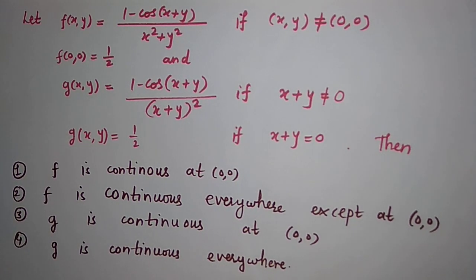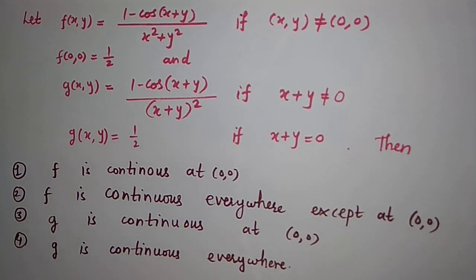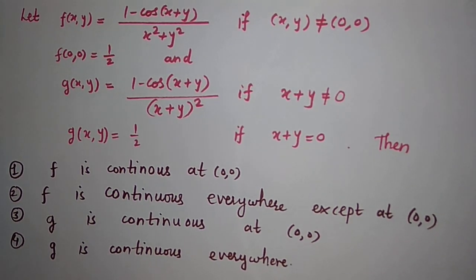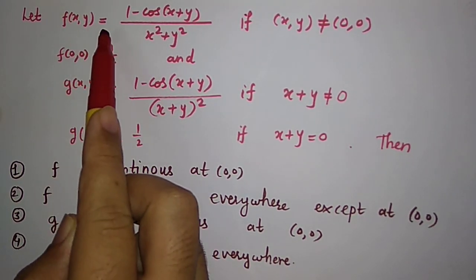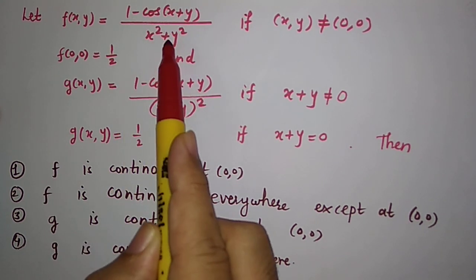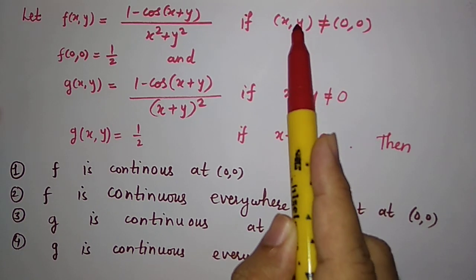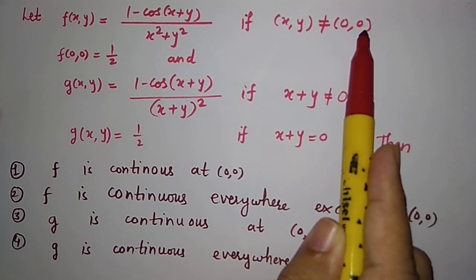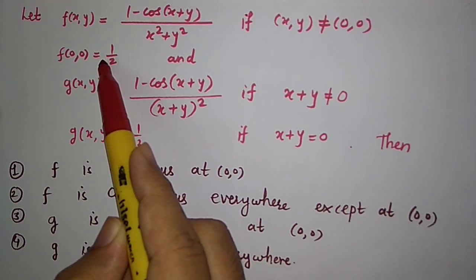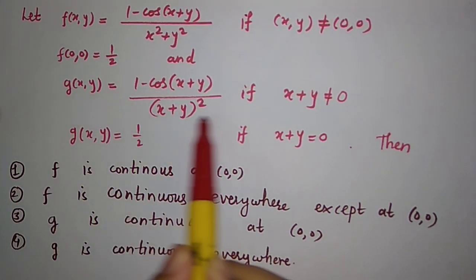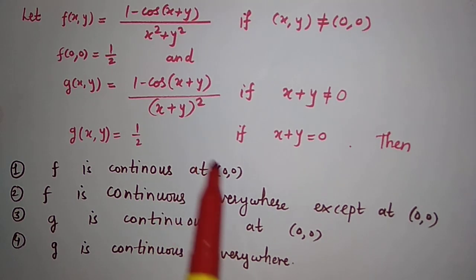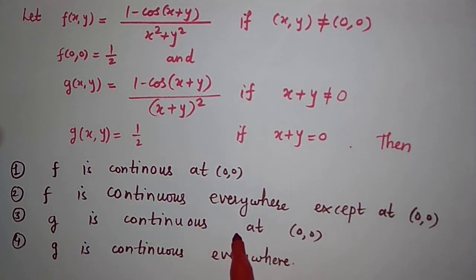Hello friends. In this video I am going to solve a problem which was asked in the CSI NET exam, and this is the equation from Part C. There might be more than one option correct. The problem is: given a function f(x,y) = (1 - cos(x+y)) / (x² + y²) if (x,y) is not the origin, and f(0,0) = 1/2. We also have g(x,y) defined similarly, and we need to find at what points the function is continuous.